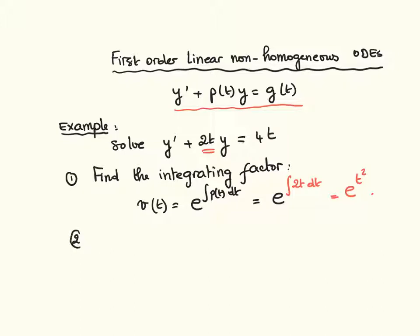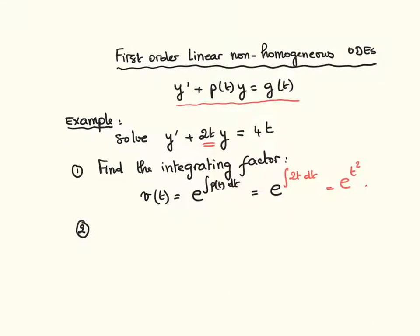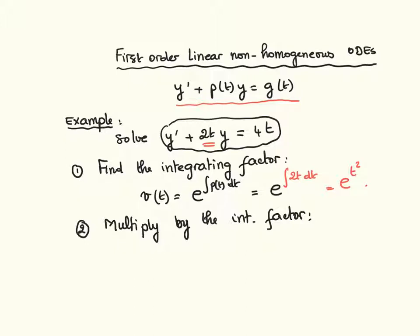Then we multiply both sides of our equation, this equation here, by this integrating factor. So we multiply by the integrating factor. And the equation will become e to the t squared y dash plus 2t e to the t squared y equal to 4t e to the t squared.